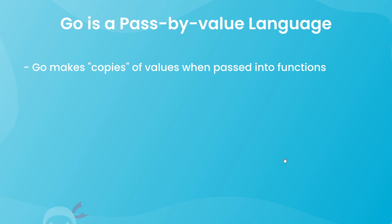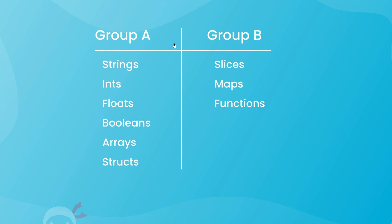Go is what's known as a pass-by-value language, which basically means that when we pass variables around as arguments in functions, Go makes a copy of those values for the function to use. In Go, variable types can be split into two distinct groups — we'll call them Group A and Group B for now. We'll give better names to them later. Understanding the difference between these two groups and how they work is pretty important and it's going to affect how you write Go code.